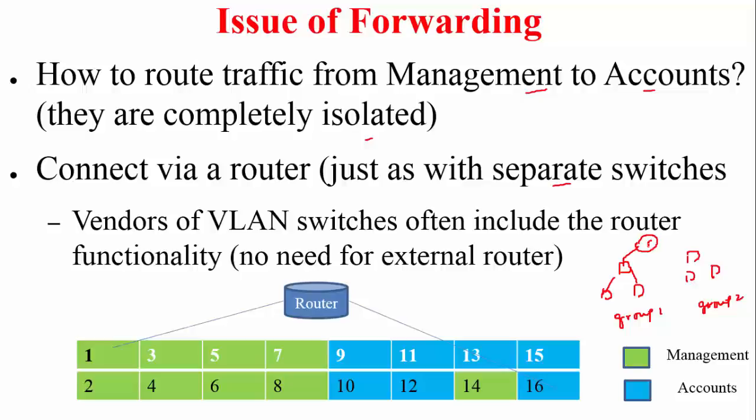The solution is straightforward: connect the two groups via a router, just like connecting separate switches. There are switches forming an extended LAN for group 1, and other switches for group 2. To interconnect the groups you use a router, which isolates the broadcast domains while handling inter-group packet forwarding at the network layer. Many VLAN switch vendors include this router functionality as part of the VLAN switch itself, so no external router is needed.